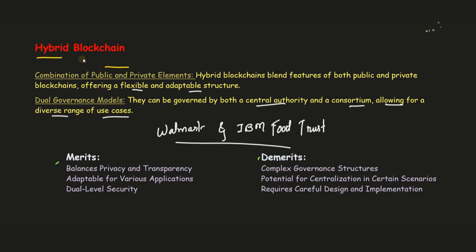Many other supply chain retailers also use hybrid blockchain technology. As merits: it balances privacy and transparency, is adaptable for various applications, and has dual-level security. As demerits: it has complex governance structures because it combines public and private elements. There is potential for centralization in certain scenarios, and since it has a complex structure, it must be carefully designed and implemented.